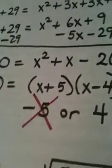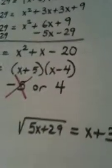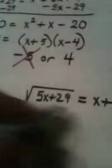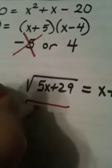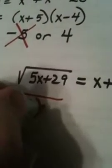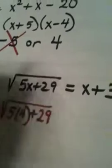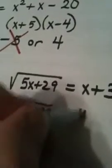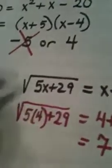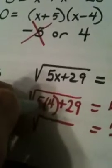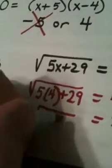Cross it out. Now let's try a 4. Go to my original problem. I have the square root of 5 times 4 plus 29 equals 4 plus 3. 4 plus 3 is 7. And here we have a radical. 20 plus 29 is 49.